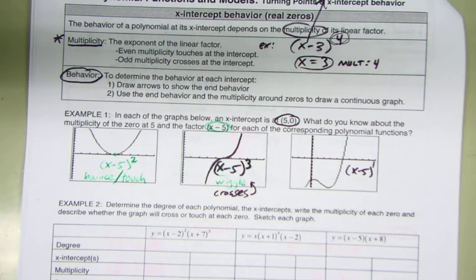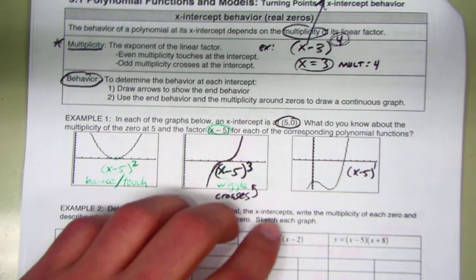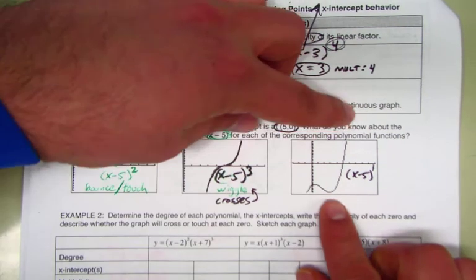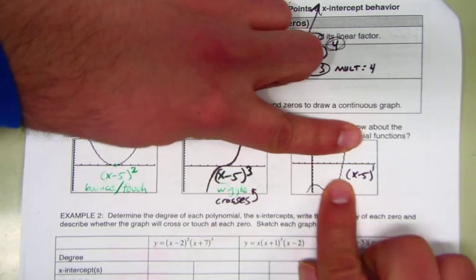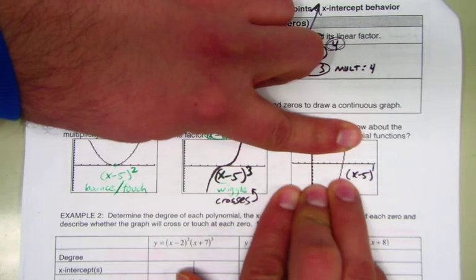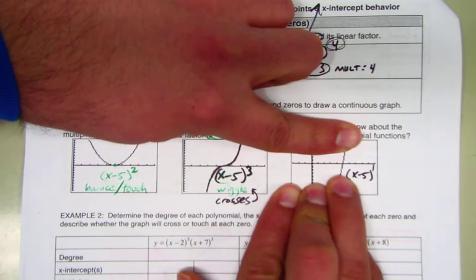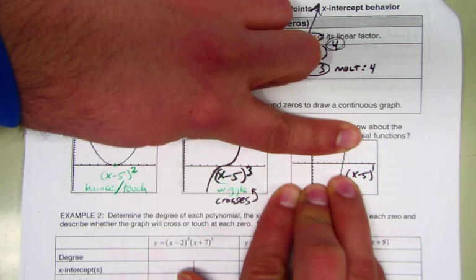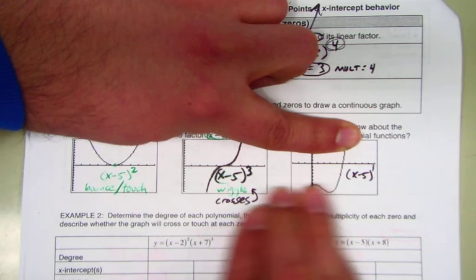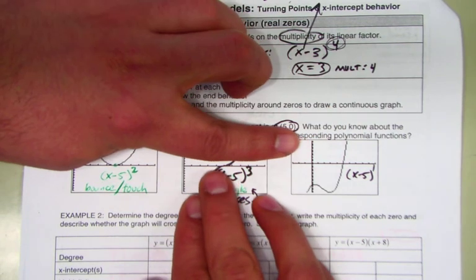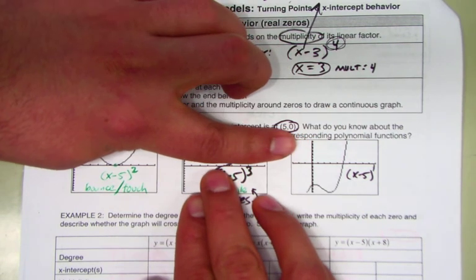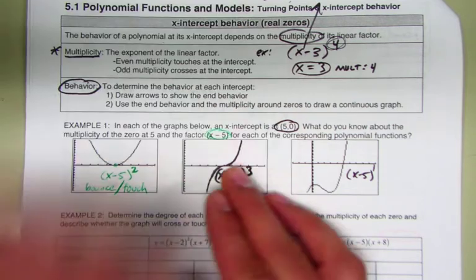All that matters is where it is at the intercept. We're thinking locally — if you zoom in right there, what does that look like? Like a line. Here, though, you can see that it still looks like a cubic if you get close to it. You don't write the exponent one; you should just know you can write it as x minus five.